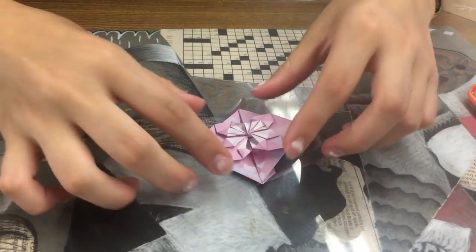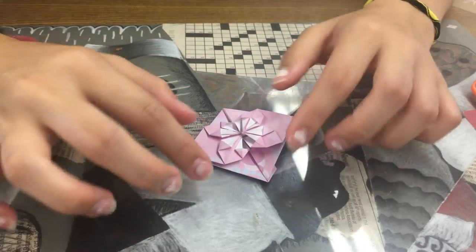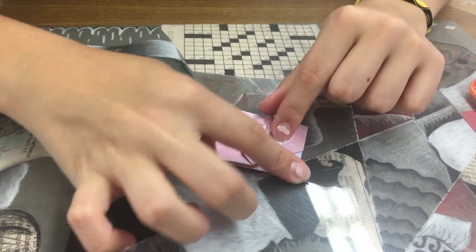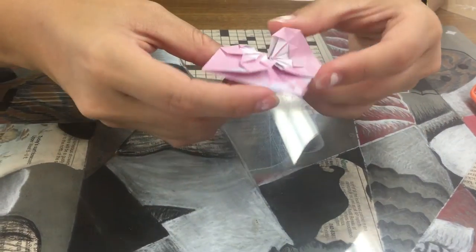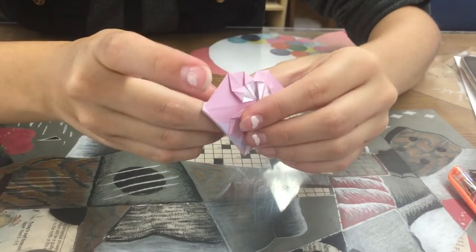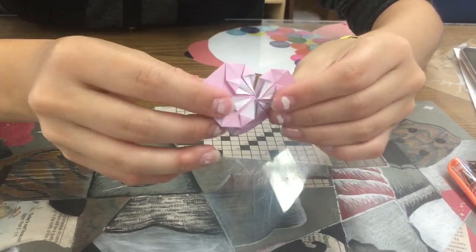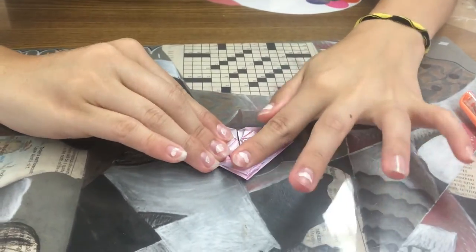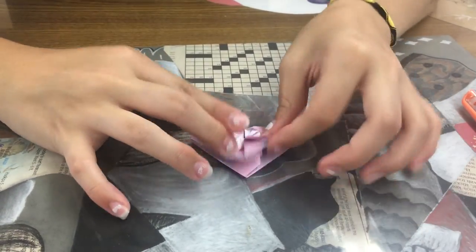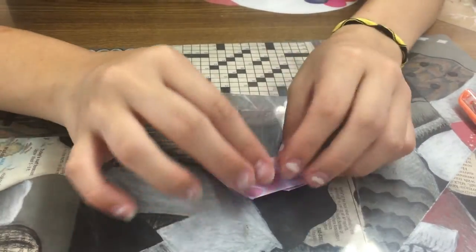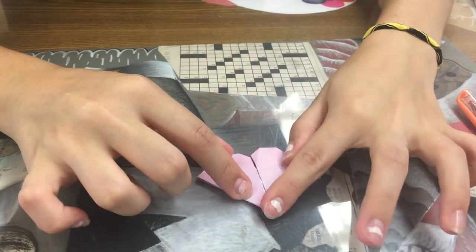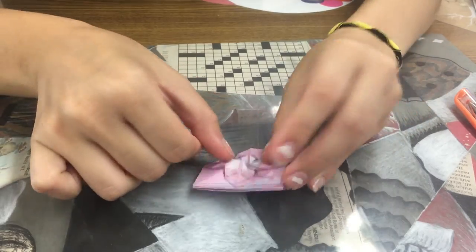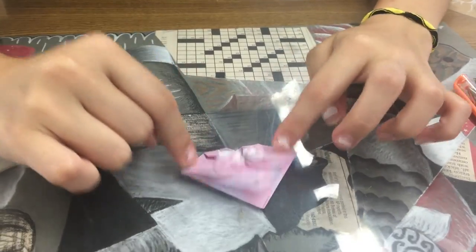This next step, you want to take either end, it doesn't matter. You can fold this side back or this side back. But we want to fold this down. So it looks like this, and the back is going to look like that. So we're essentially just taking this and folding it down. And then you can already see we have the makings of our heart.